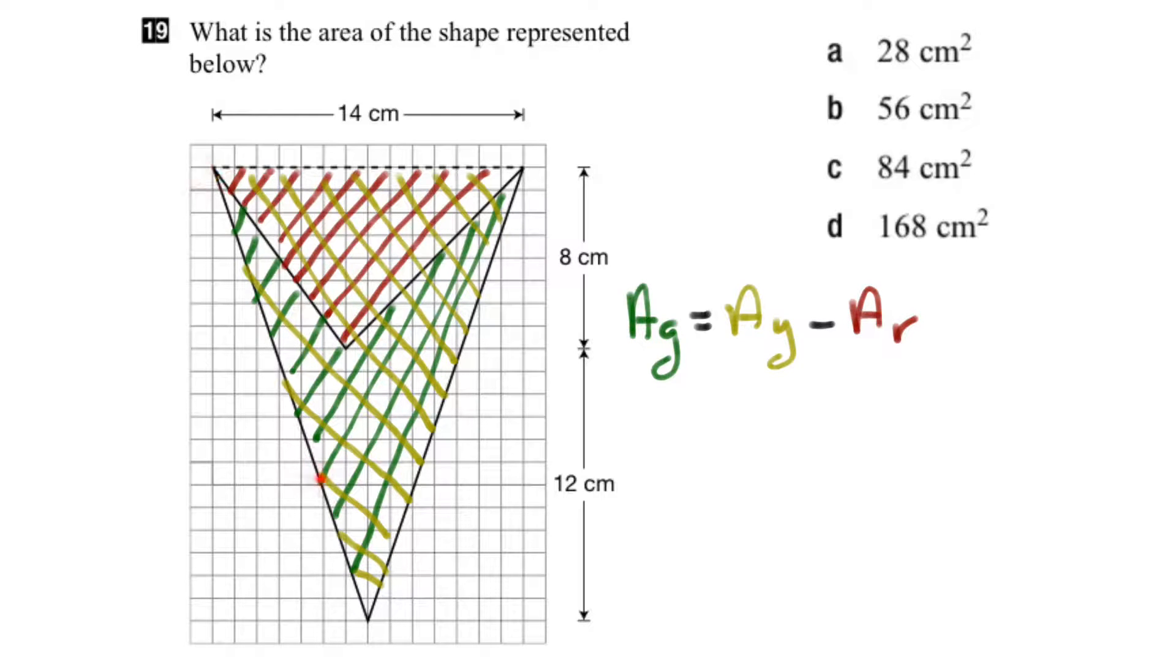So the yellow part here is a triangle, and the red part is also a triangle. The area of the yellow part is given by half the base times the height, and for the red part, also given by half the base times the height of the red part.